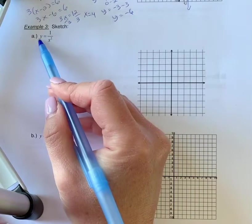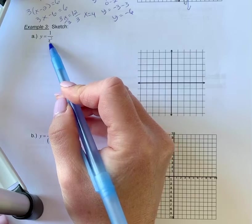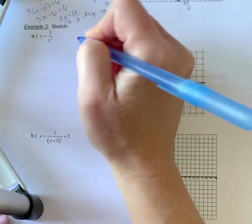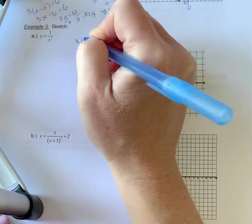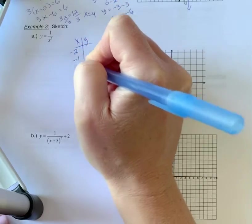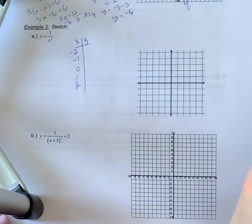Example 3a: sketch the graph of y equals 1 over x squared. Now, since this is a new graph we're going to do a table of values and we're going to choose our standard x values. We can square negatives and everything.